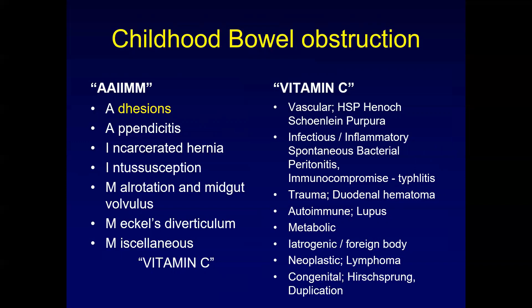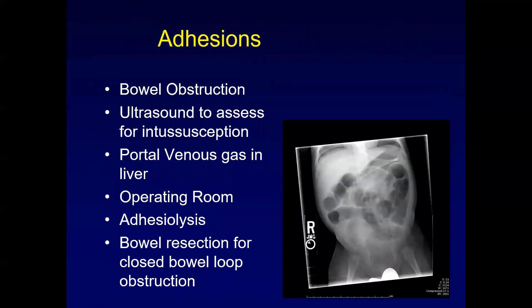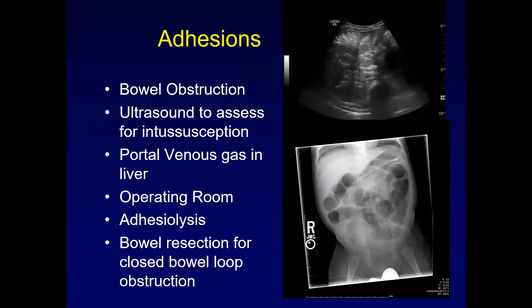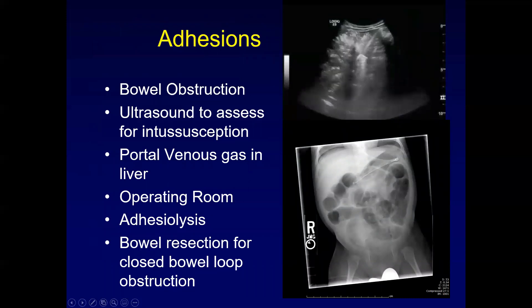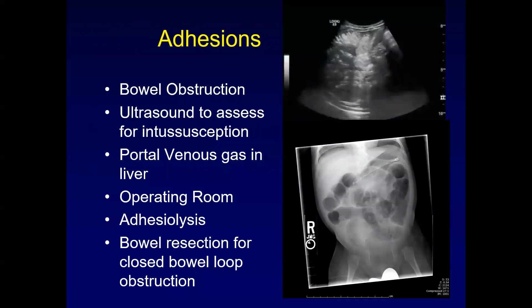Adhesions are fibrous bands that occur after surgery, which can develop days to weeks after the procedure and may lead to bowel obstruction requiring adhesiolysis. This three-month-old, two months post-surgery, presented with non-bilious emesis and intermittent inconsolable episodes. The plain film demonstrated dilated small bowel — with width of bowel loops greater than the diameter of the underlying vertebral body — and multiple air fluid levels on upright imaging. The child was initially thought to have intussusception, so an ultrasound was performed. No intussusception was found, but abundant portal venous gas was noted in the liver, consistent with bacterial translocation of endotoxin from the compromised intestine. This was a surgical emergency, requiring 10 centimeters of bowel resection for adhesiolysis.